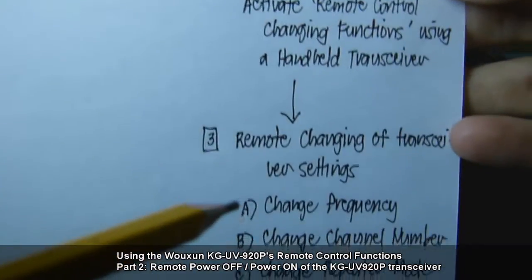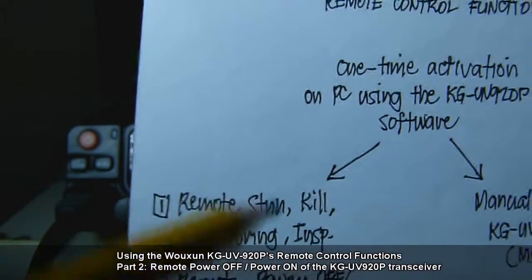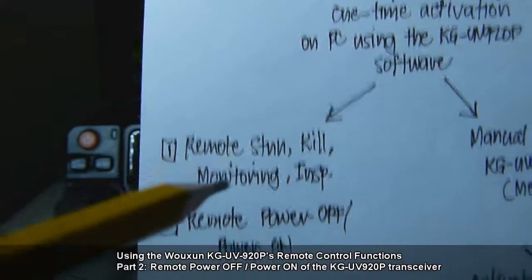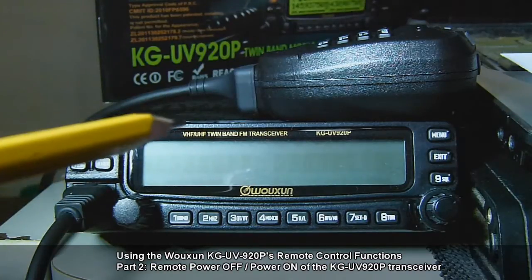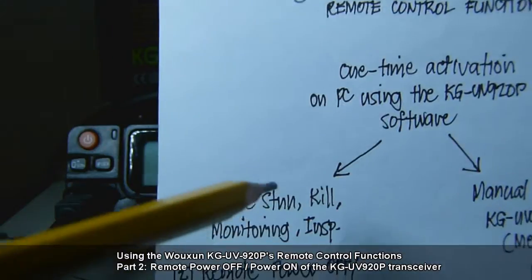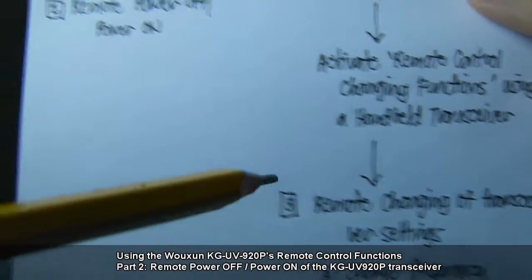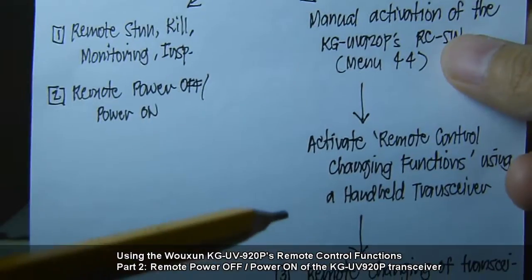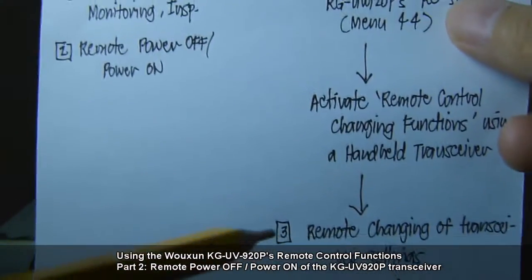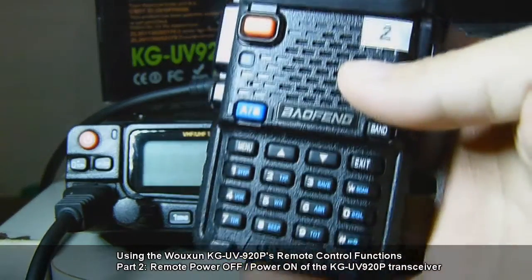We could also do remote changing of transceiver settings. I won't be covering remote stun/kill monitoring procedures because that would require another KG-UV920P for demonstration, and I only have one. For remote power off/on and remote changing of transceiver settings, this can be done using another radio serving as an HT controller — a handheld transmitter. For this demonstration, I will be using a Baofeng UV-5R.